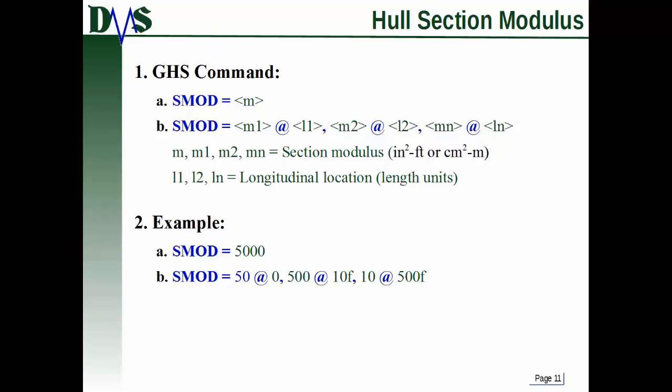Now, how do we actually enter this into GHS? It's the SMOD command. And just like with all the other things, you can define a single value or you can define a range of values that vary along the hull. If you want to define a single value, it's SMOD equals that value. Remember your units. Or if you want to define a curve, it's SMOD equals section modulus at location, section modulus at location, on and on to however many points you need.